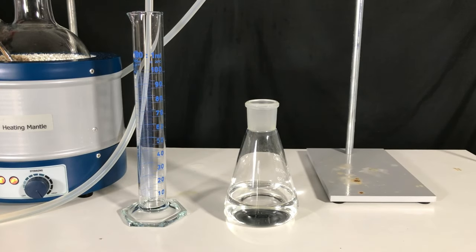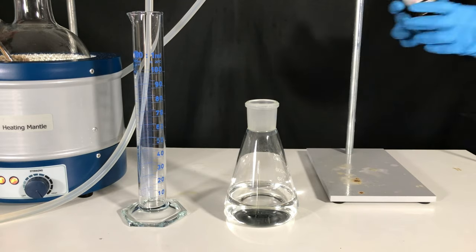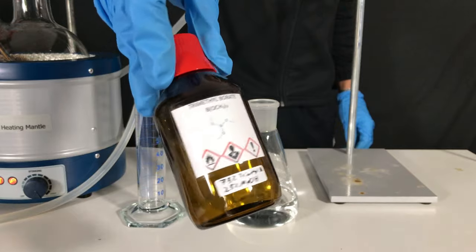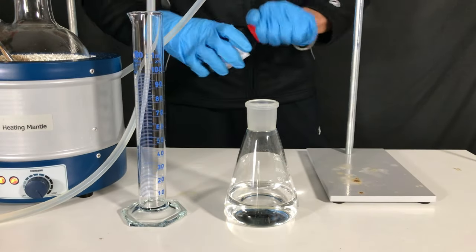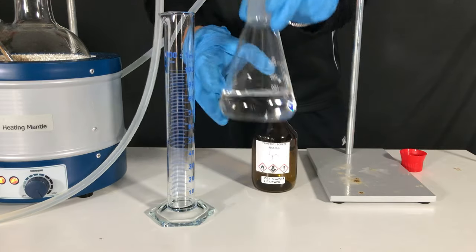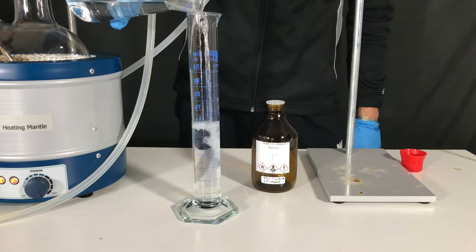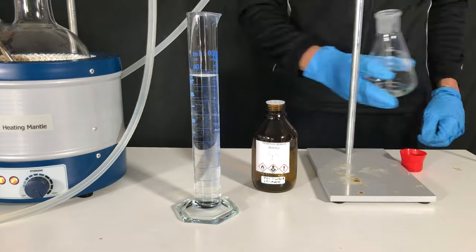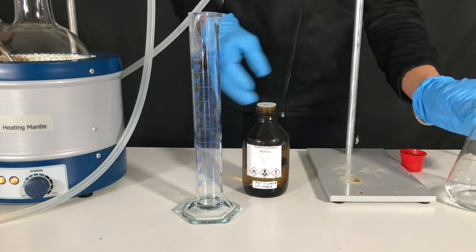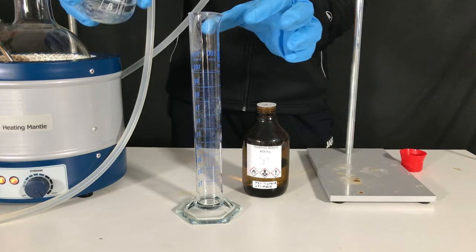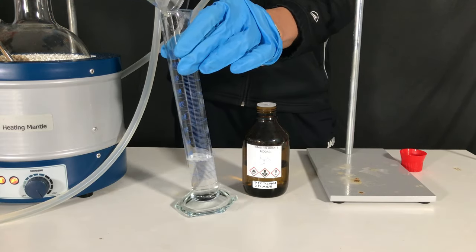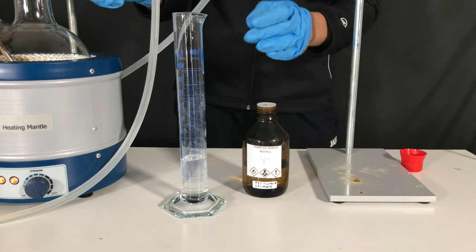While waiting for it to distill over, the methanol tri-methyl borate azeotrope was measured out using a measuring cylinder and was then transferred to a storage bottle. In total, 143 ml were collected. What is interesting is that when you look closely at the measuring cylinder, you can also see some boric acid that formed due to hydrolysis of the trimethyl borate.